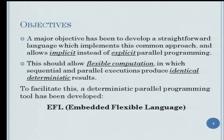Our objectives were, and continue to be: a major objective has been to develop a straightforward language which implements that common approach and allows implicit, instead of explicit, parallel programming, making it easier to program parallel systems. This should allow flexible computation, in which sequential and parallel executions produce identical, deterministic results. It doesn't matter if we run the same program sequentially or in parallel — we ensure that the result values will be the same. The execution is completely deterministic.